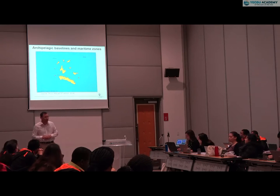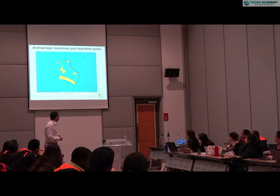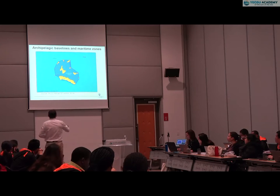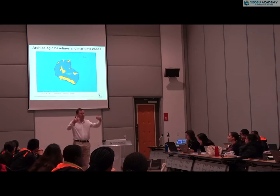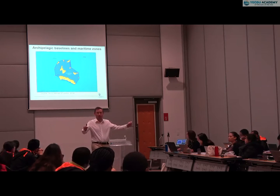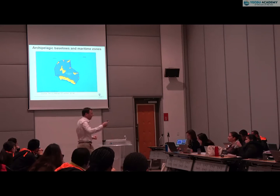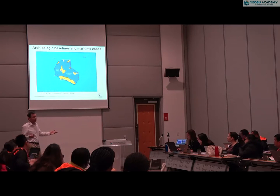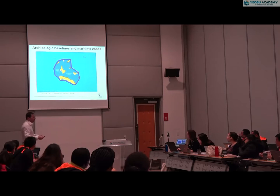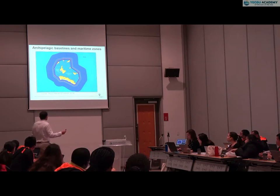Here we have an archipelago. You draw archipelagic baselines around it. Rather than putting archipelagic baselines all the way around, you can mix up your baselines — using normal baselines on the outer face of islands joined up by archipelagic baselines to the next island. You can have a bay closing line or river closing line within the archipelago, so you can have internal waters within archipelagic waters. Then you generate your maritime jurisdiction out to 200 miles and potentially an extended continental shelf.